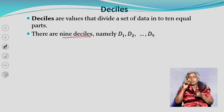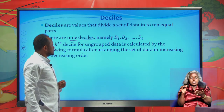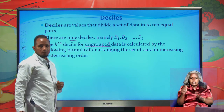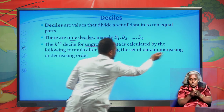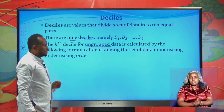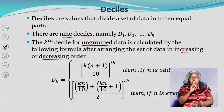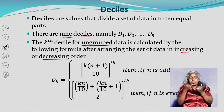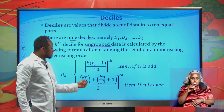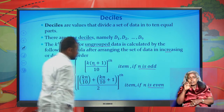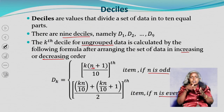There are nine deciles, namely D1, D2, up to D9. The k-th decile for ungrouped data is calculated after arranging the data in increasing or decreasing order. The formula is: k(n+1)/10's item when n is odd, and the average of the (kn/10)-th and (kn/10 + 1)-th items when n is even. Compared to the quartile formula, the denominator changes from 4 to 10.